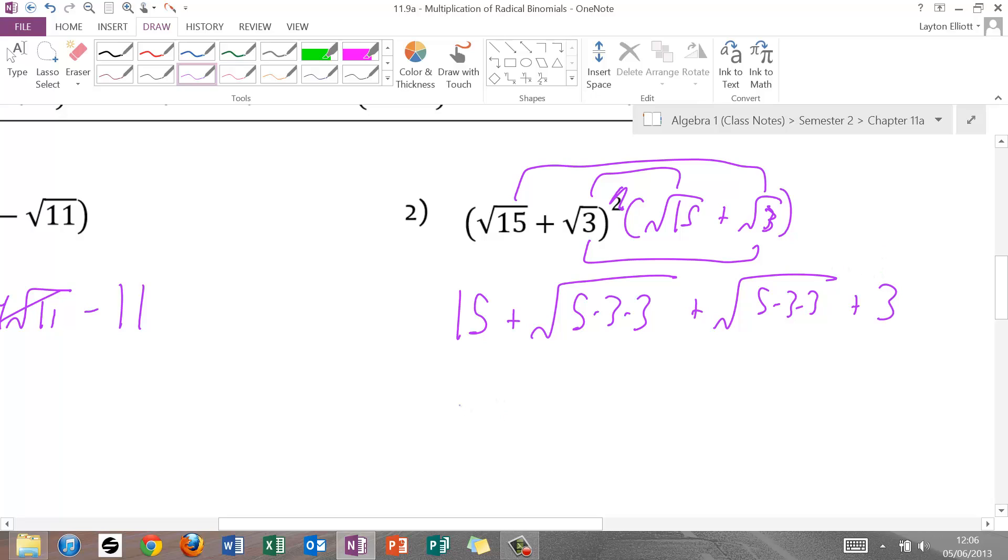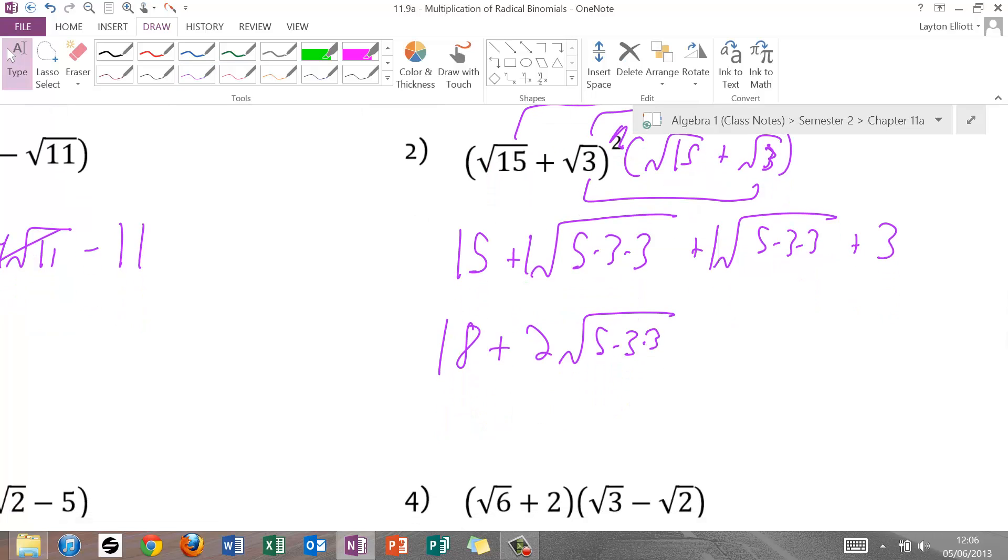Let's combine like terms. We have 18 plus... I know this is going to be 2 radical 5 times 3 times 3. Where did the 2 come from? Well, I have a radical with a coefficient of 1, another radical with a coefficient of 1, and 1 plus 1. Last time I checked, it's still 2. Let's go to simplify the radical. If I hold these 3s out, 3 times 2 is 6. So I have 18 plus 6 times the square root of 5.